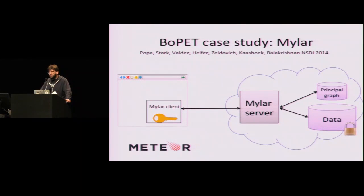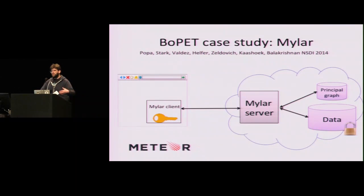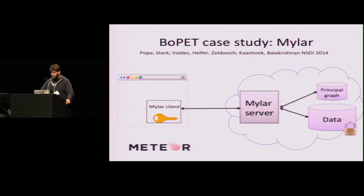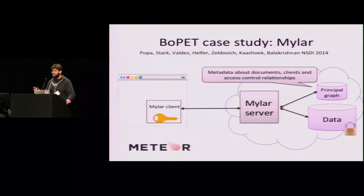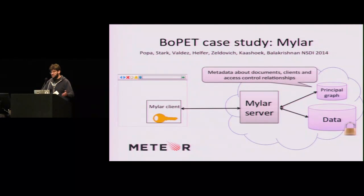To assess this question, we did a case study on a BOPETS called Mylar, which was a paper published in NSDI 2014 by Popa et al. Mylar basically uses the Meteor JavaScript web application framework and builds cryptographic functionality on top of it — handling multi-key searchable encryption, key management, and access control. The Mylar server handles requests from clients and access control, and has access to a principal graph containing metadata about access control relationships between documents and clients.